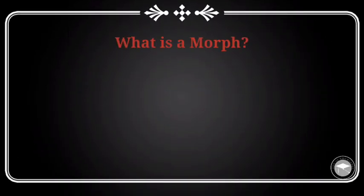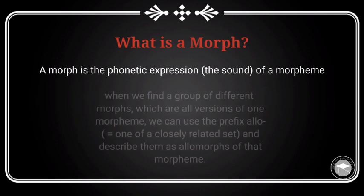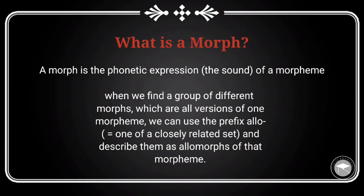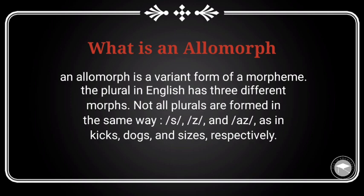Hi guys, welcome to this lesson: types of allomorphs. First, what is a morph? It is the phonetic expression or sound of a morpheme. When we find a group of different morphs which are all versions of one morpheme, we can use the prefix 'allo' to describe them as allomorphs of that morpheme. So an allomorph is a variant form of a morpheme. In English, the regular plural has three different morphs.